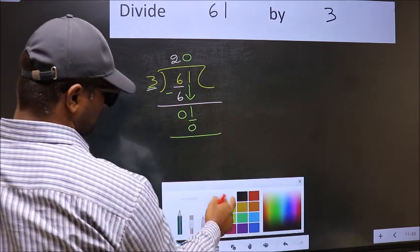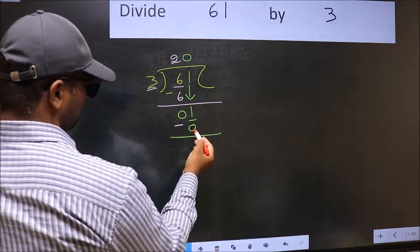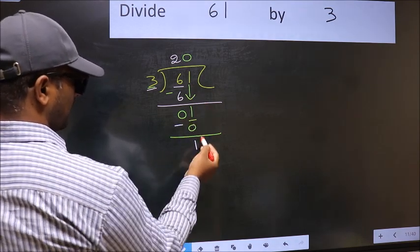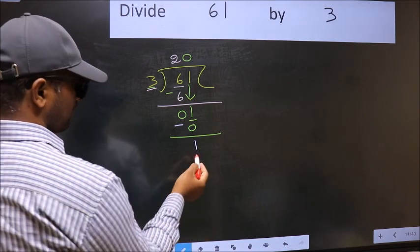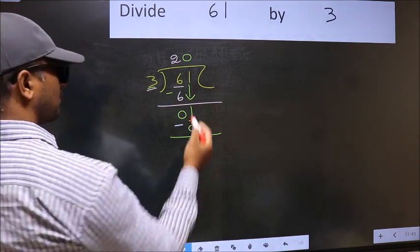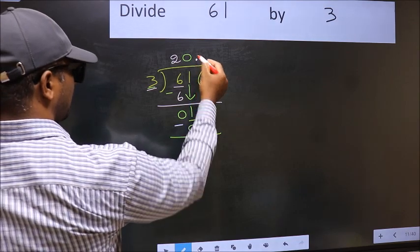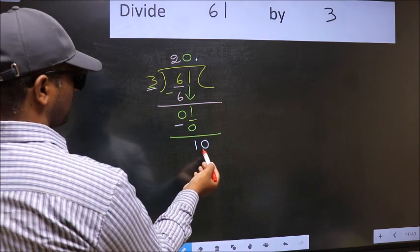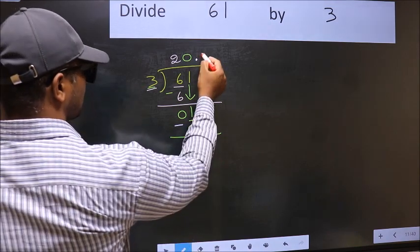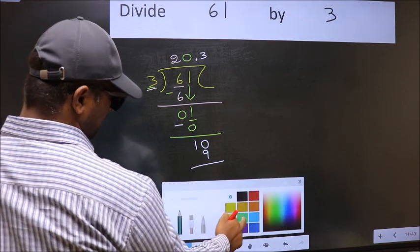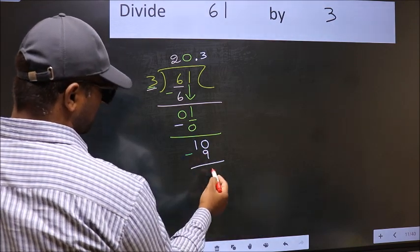So now you should subtract. 1 minus 0 is 1. Over here, no numbers to bring down, and 1 is smaller than 3. So now you can put a dot and take 0. So 10, a number close to 10 in the 3 table is 3 times 3 is 9. Now you subtract. 10 minus 9 is 1.